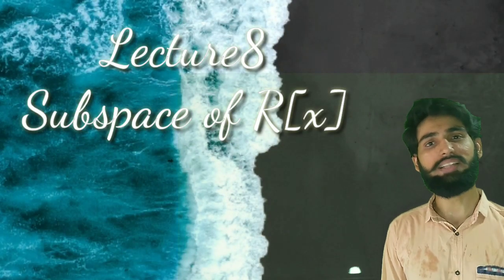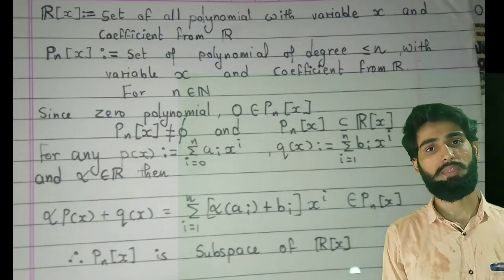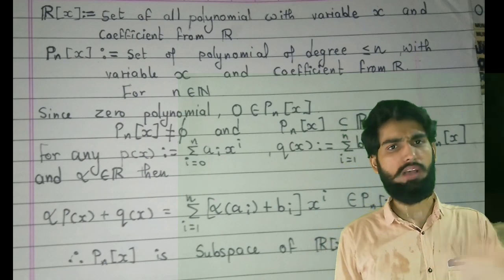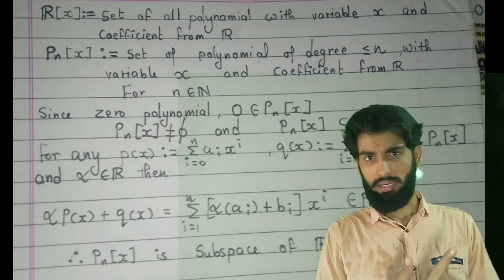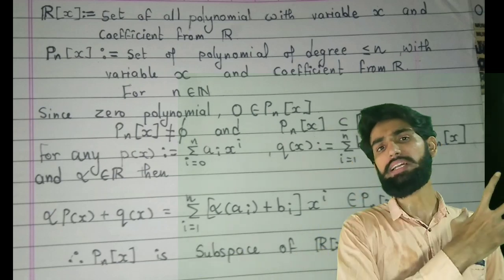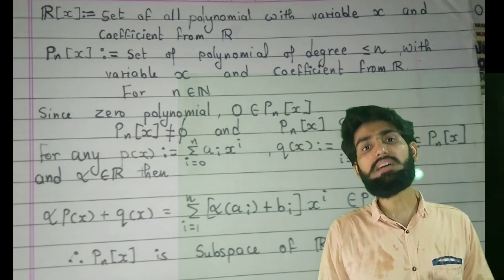Hello friends, welcome to this lecture. In this lecture we are going to discuss about this. We already know R[x] is a vector space under the operations - operation is nothing but adding the like terms is the first operation and the second scalar product is just distributing them. Now in this, the subspace is nothing but P_n[x].